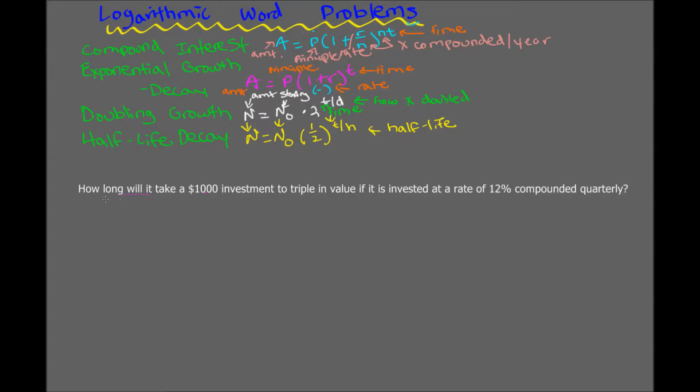So let's do this word problem here. How long will it take a $1,000 investment to triple in value if it is invested at a rate of 12% compounded quarterly? We're going to be using the compound interest formula right there. So let's fill in the variables with the information that we have.